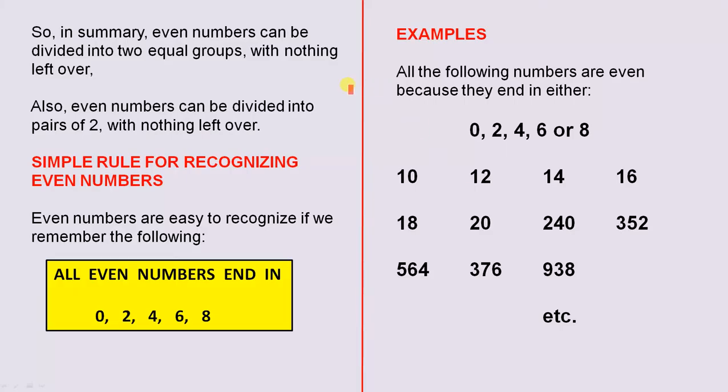So in summary, even numbers can be divided into two equal groups with nothing left over. Also, even numbers can be divided into pairs of two with nothing left over. So here's a simple rule for recognizing even numbers, doesn't matter what they are. Even numbers are easy to recognize if we remember the following.